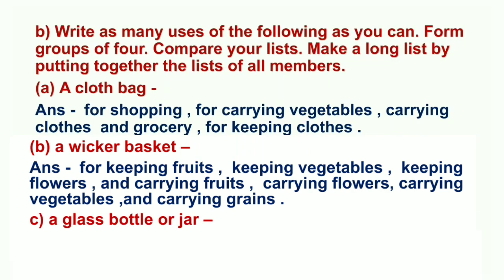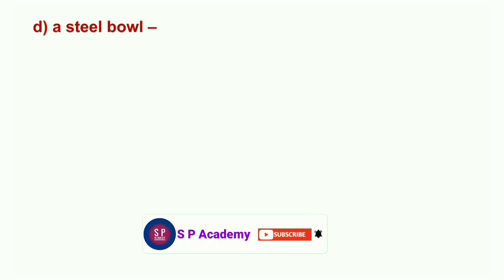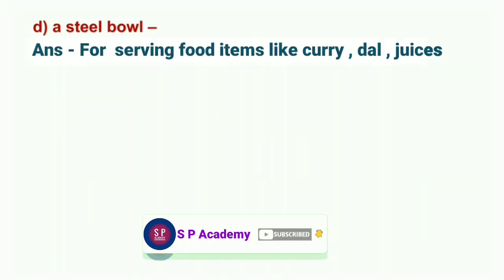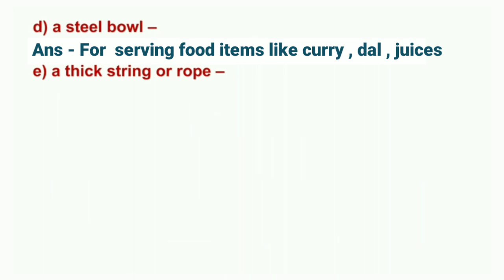C: Glass bottle or jar — uses: for keeping water, milk, jam, juice, and pickles. D: Steel bowl — uses: for serving food items like curry, dal, and juices.